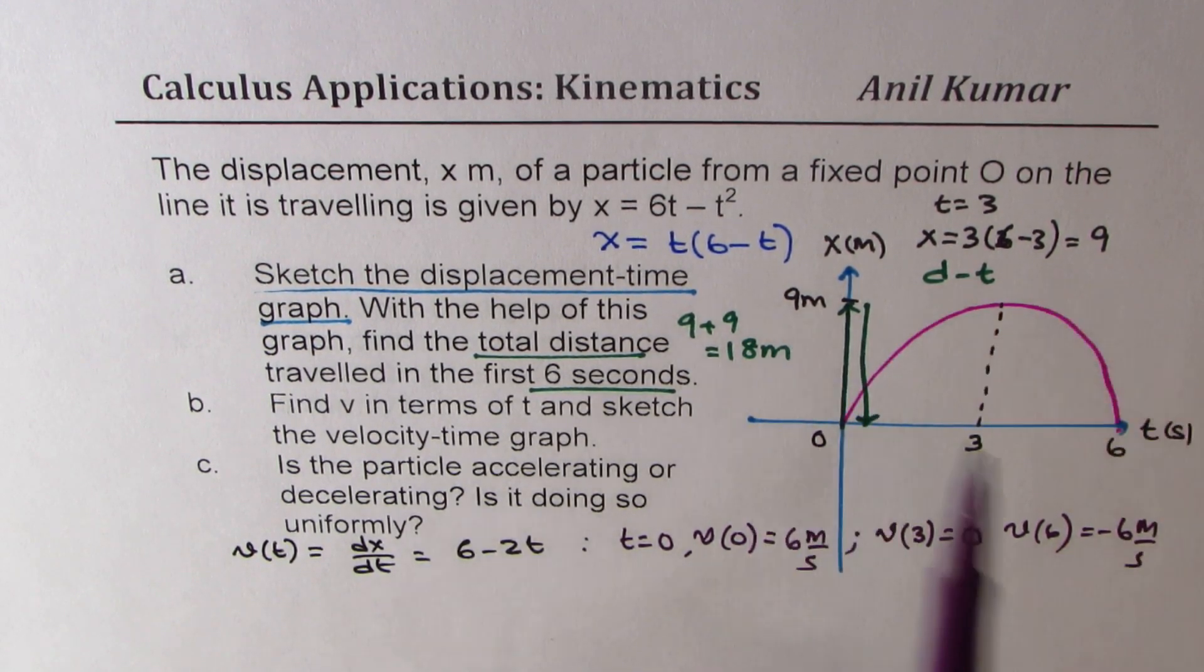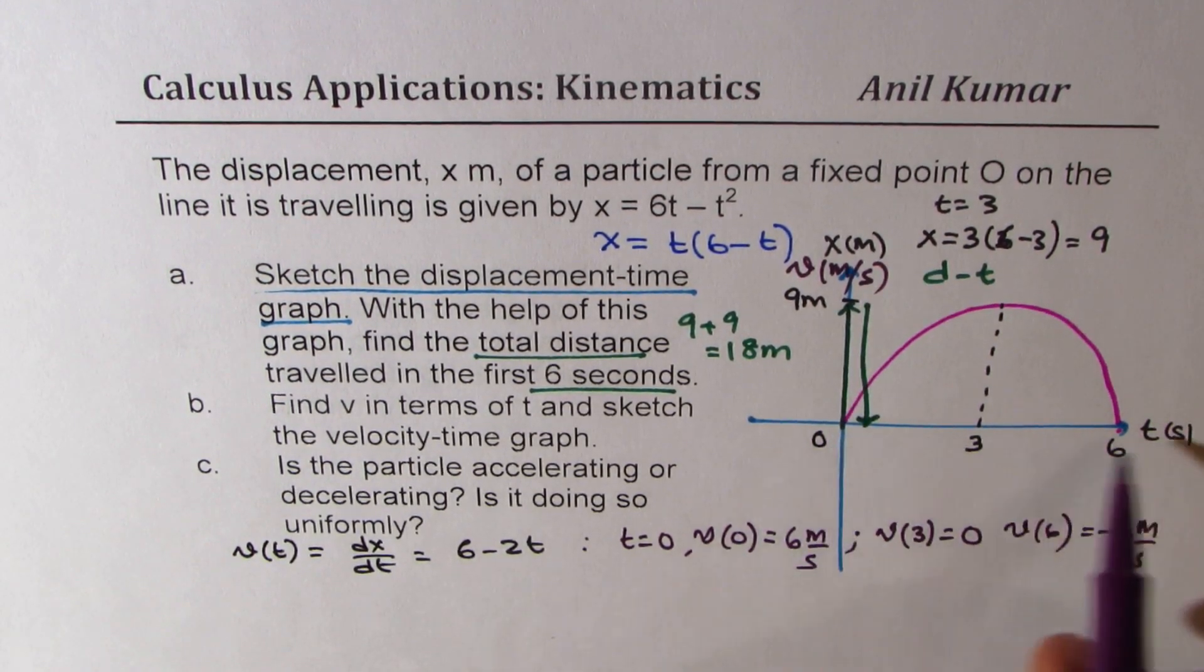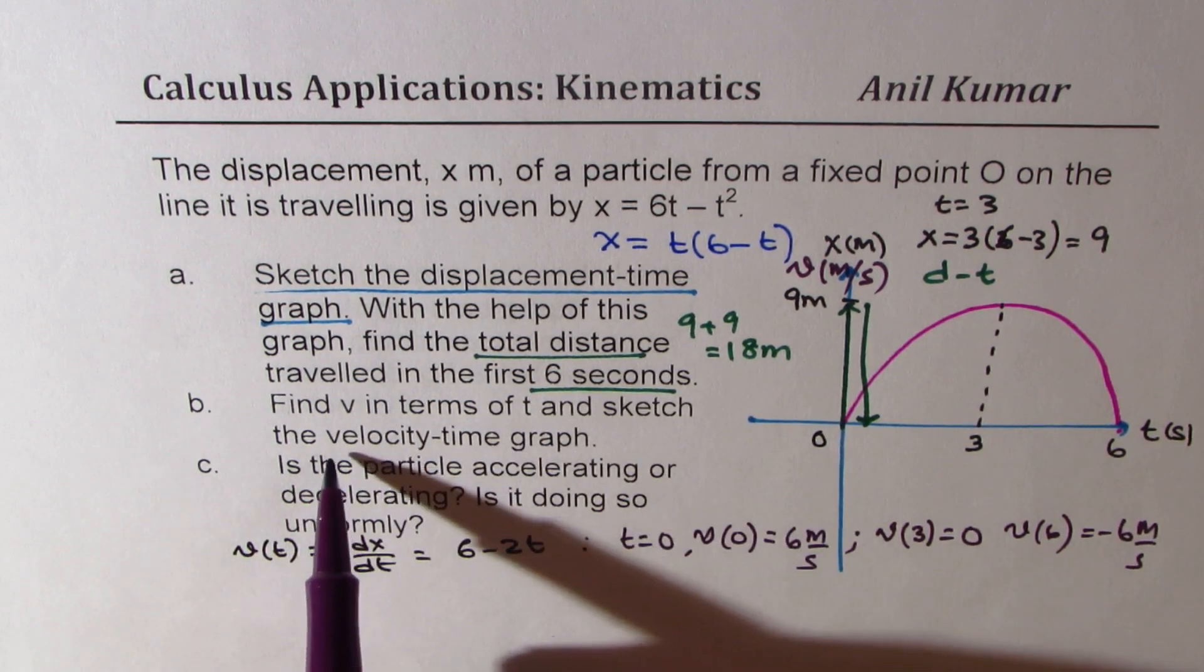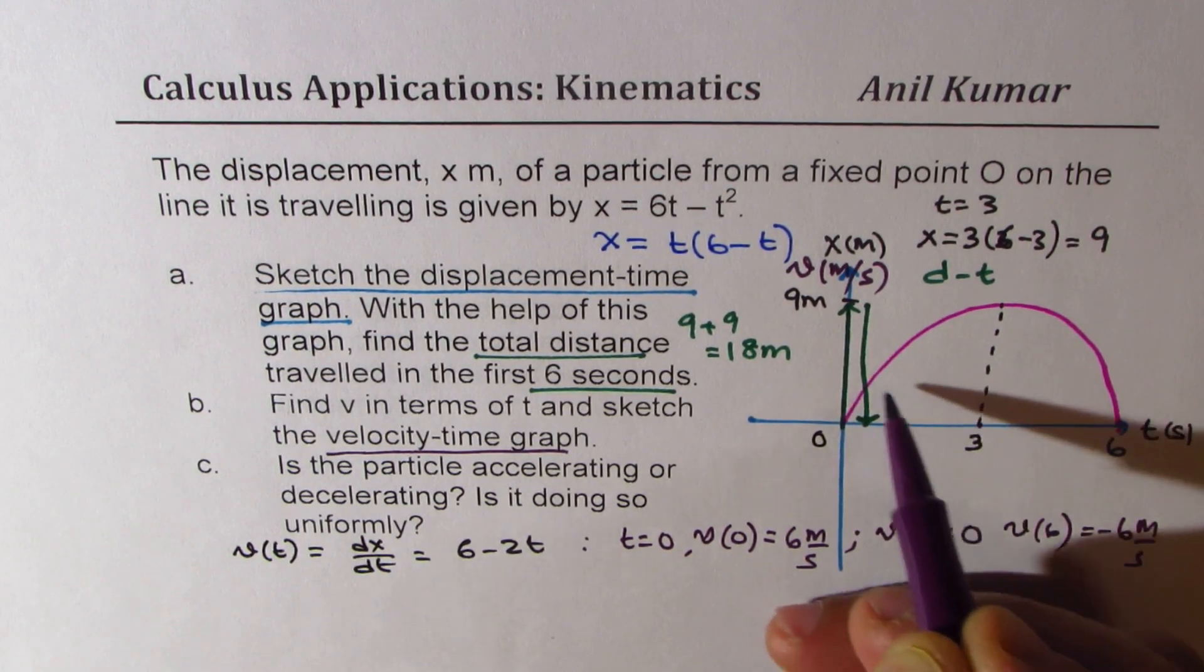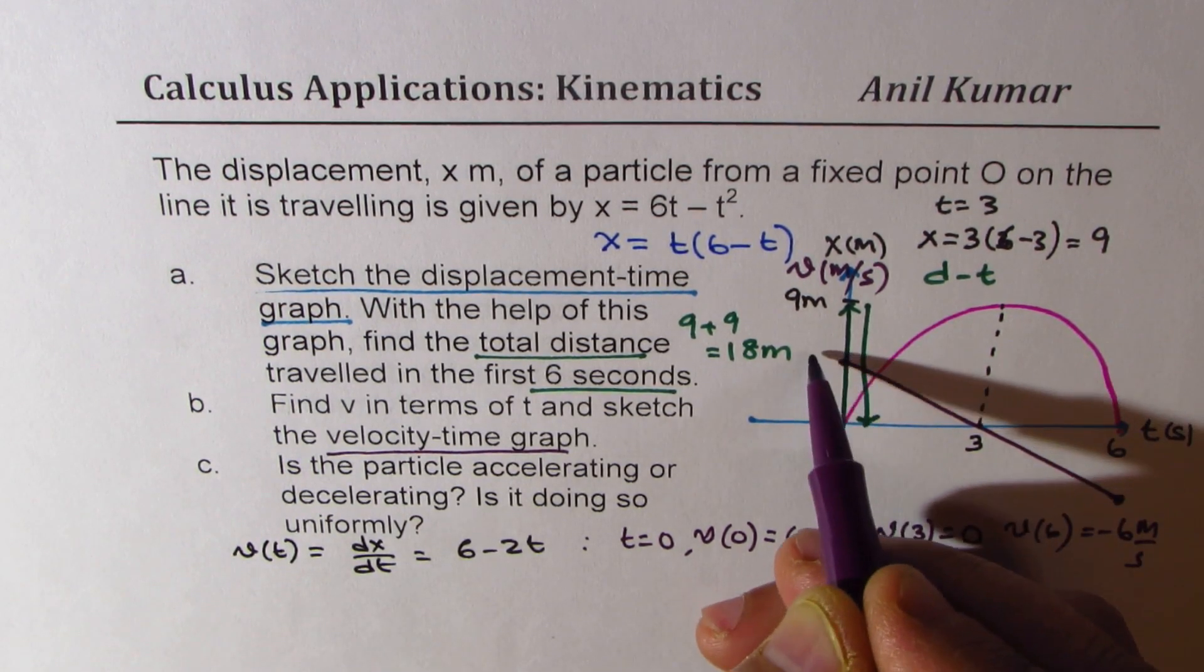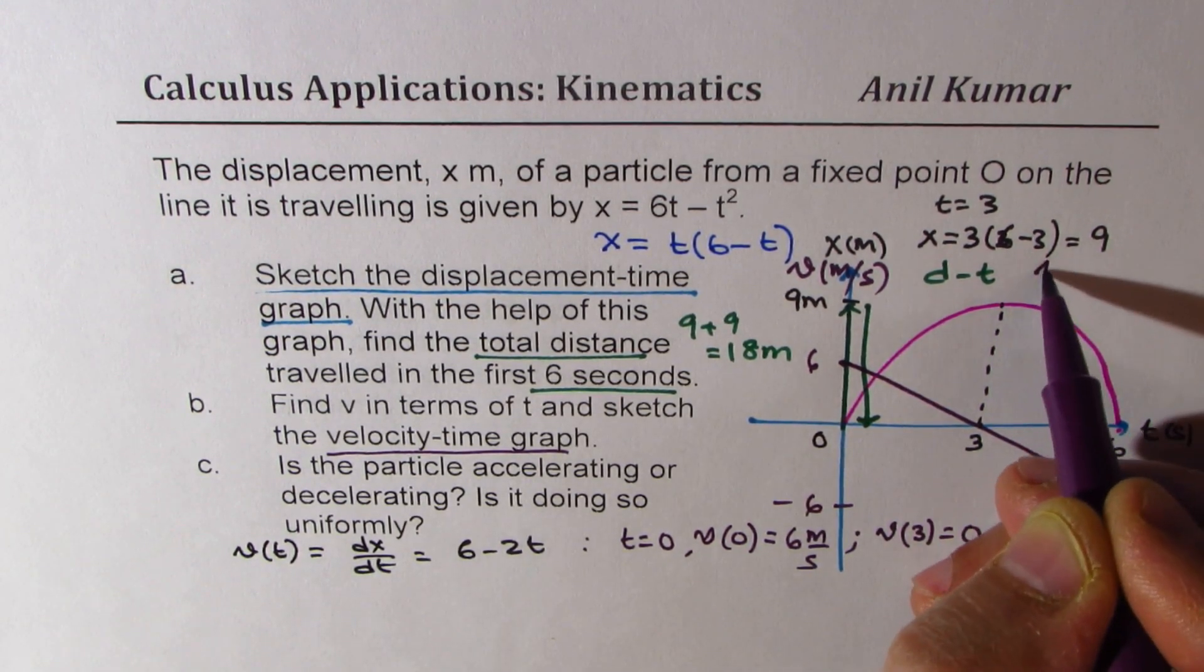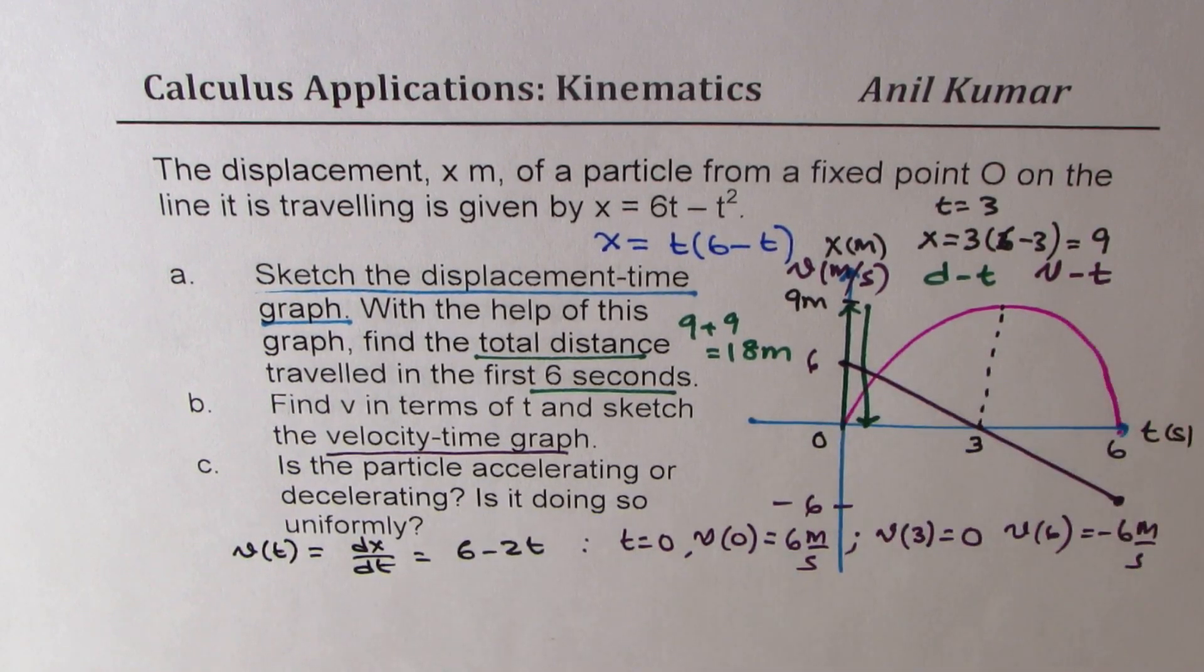Now we definitely have a different scale for velocity. So we'll have velocity in meters per second. But time, we can keep it in seconds. So just to make it more interesting and useful, I will show the velocity time graph on the same graph. So it is 6 meters per second and it goes up to minus 6. So that becomes the velocity time graph. That is how you get your velocity time graph. It is derivative of displacement.